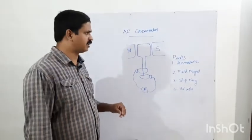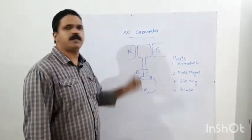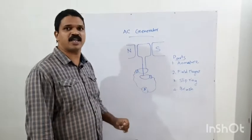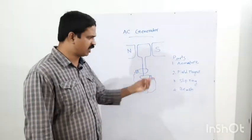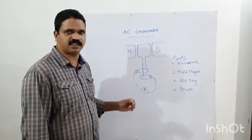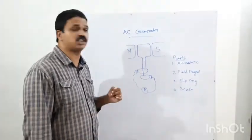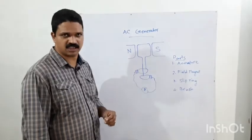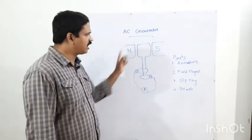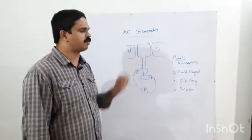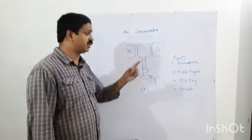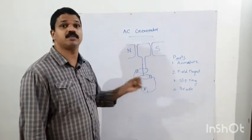The AC generator has four main parts. The first part is the armature. The second one is field magnets. The third one is slip rings. The fourth one is the brush. I am going to explain what each of these — armature, field magnet, slip ring, and brush — means.